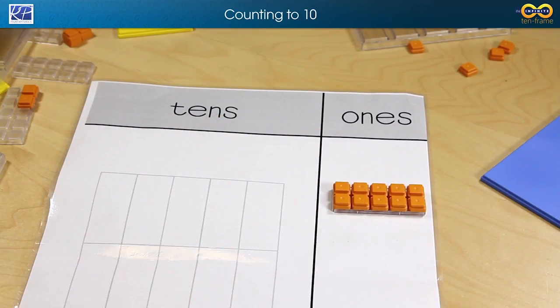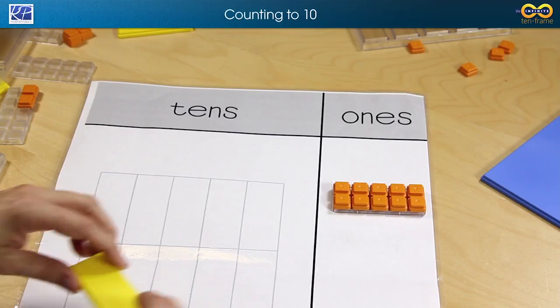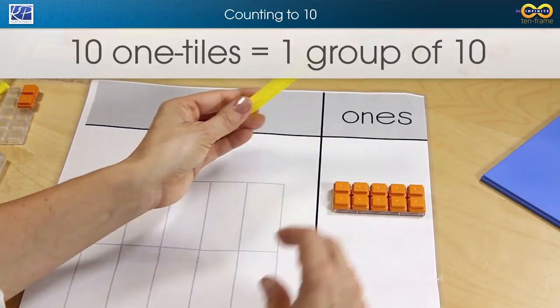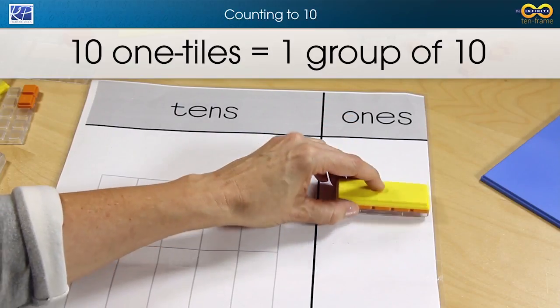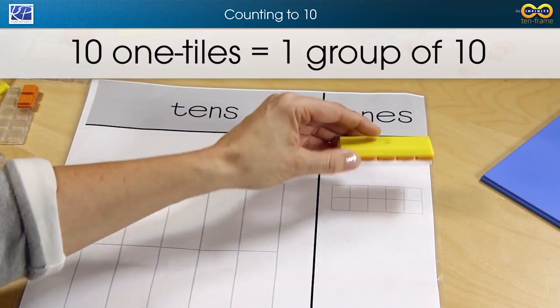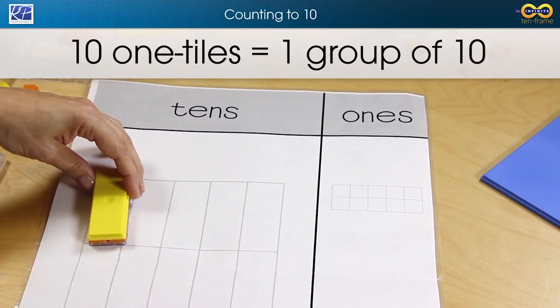Students need many opportunities to develop this idea of 10 and all of the ways 10 can be composed, but once they get to 10 they can then take a grouping tile and show that 10 ones is the same as one group of 10. Once again, 10 ones is concurrently one group of 10.